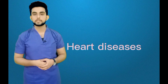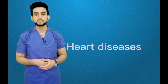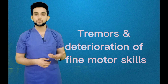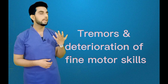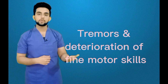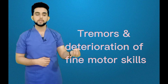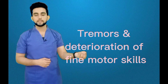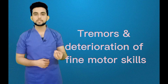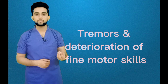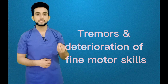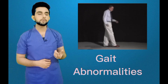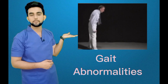The next symptom is heart disease — the heart is also a muscular organ, so we can have heart problems. We also have tremors and deterioration of fine motor skills. For example, if you want to pick up a pen, you cannot do it because your hands are trembling.